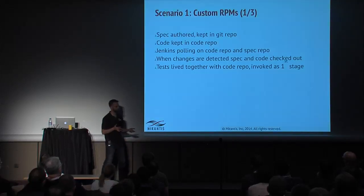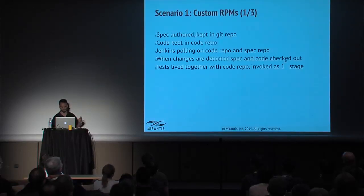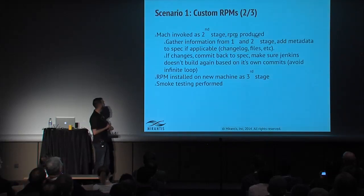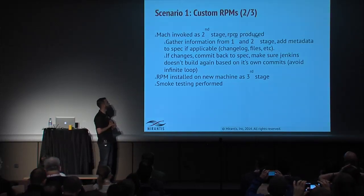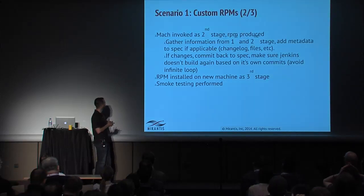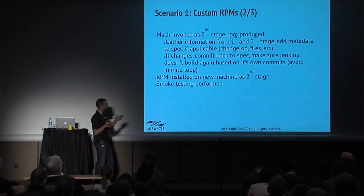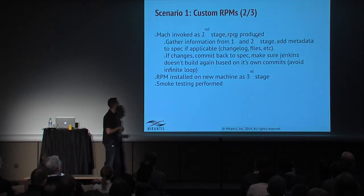The first stage was done on a new virtual machine — a fresh CentOS 6.x environment. Mock, an RPM builder, was invoked as a second stage, also on a vanilla machine, to produce the RPM artifact. At this point, hopefully we got a successful RPM plus some metadata from the build — for example, a changelog entry so operators could understand why the version changed. Those changes would be automatically committed back to the spec, making sure Jenkins didn't get into an infinite loop.